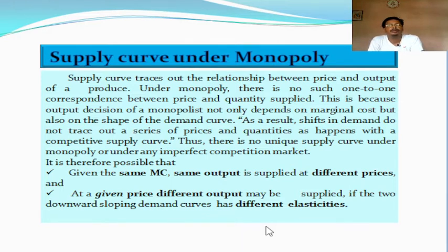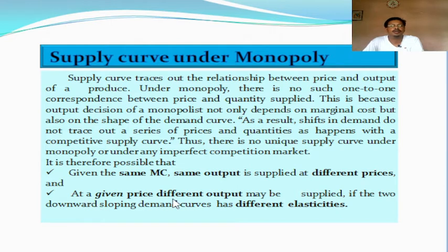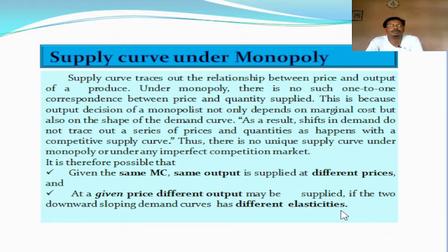The absence of supply curve under monopoly has mainly two possibilities. One is: given the same MC, the same output is supplied at different prices — meaning the monopoly seller is charging different prices but at the same marginal cost. In another case, at a given price, different output may be supplied depending on difference in elasticity of demand in different markets — meaning for a particular price, he is selling different units of goods to different buyers.